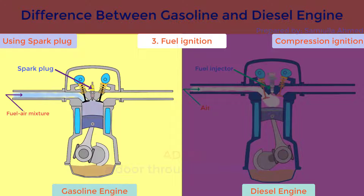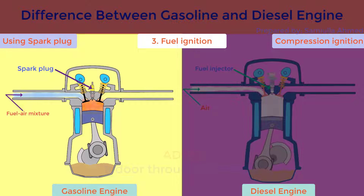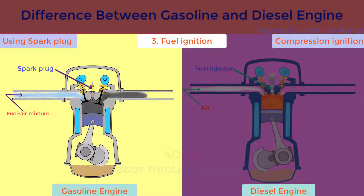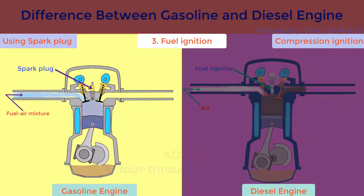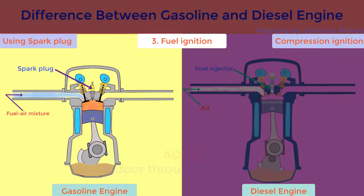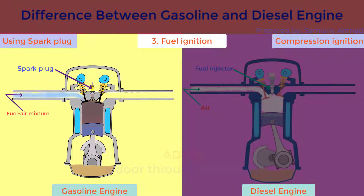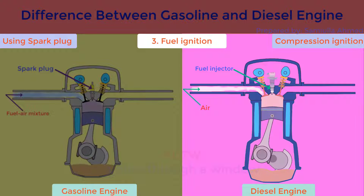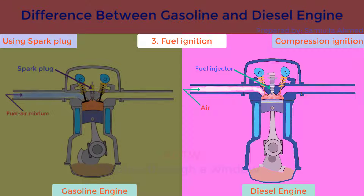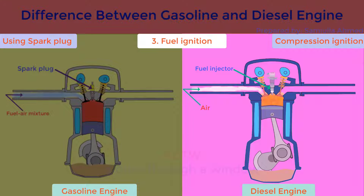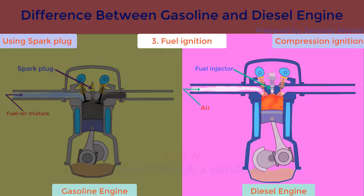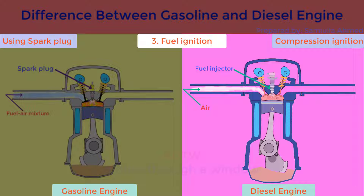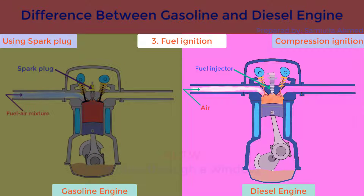Fuel ignition. In gasoline engine, air and fuel mixture is ignited using spark plug and the mixture burns, expanding and forcing the piston down. Since there is a spark plug which ignites the fuel, there will be no trouble in starting during cold weather. In diesel engine, fuel is injected at high pressure into the hot compressed air in the cylinder causing it to self-ignite, and burnt gases force the piston down. Here, no spark is required, and during cold weather it makes it difficult to start.